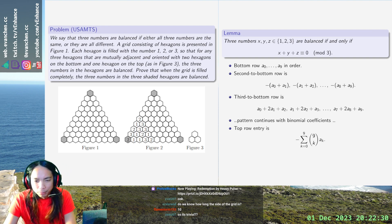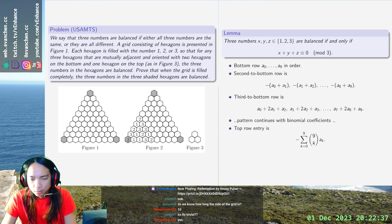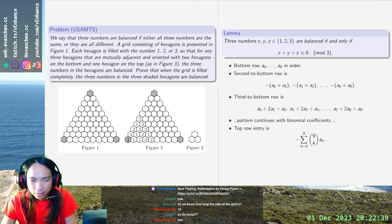Yeah, so modulo 3, this is actually minus a0 plus a9, as desired.